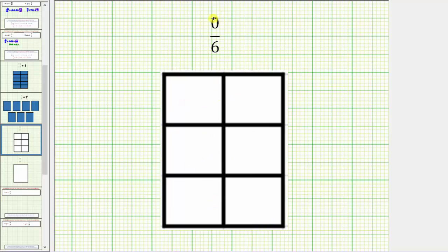But because the numerator is zero, we would shade zero of them, which represents an amount of zero, and therefore this fraction simplifies to zero.